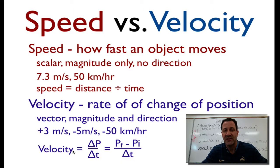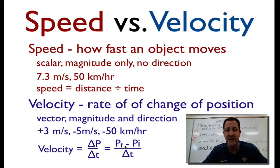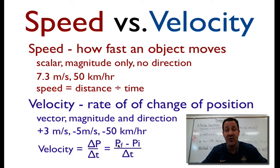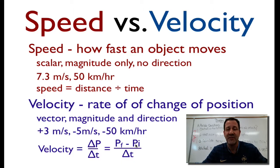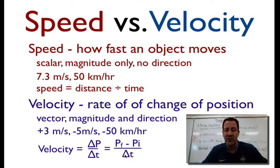To calculate velocity, we take the change in position divided by the change in time. The change in position is found by taking the final position minus the initial position — just those two points. You must always do final minus initial, otherwise you'll get the signs incorrect. Divide that by the change in time. This means we don't care what the object did between its final and initial position — whether it stopped or slowed down. This is the average velocity we're calculating.